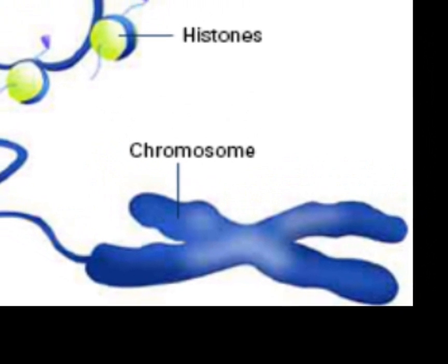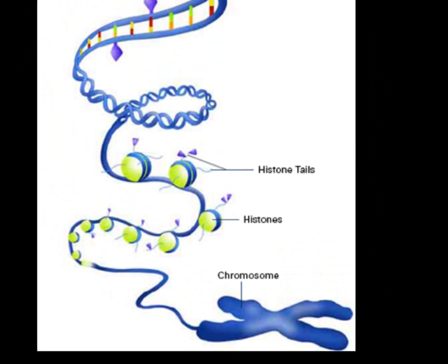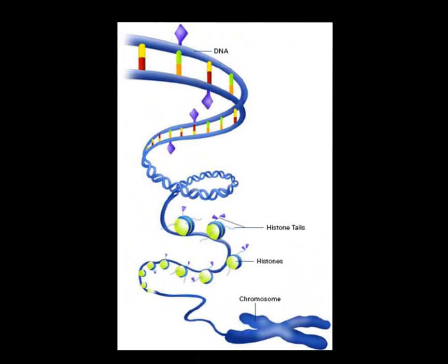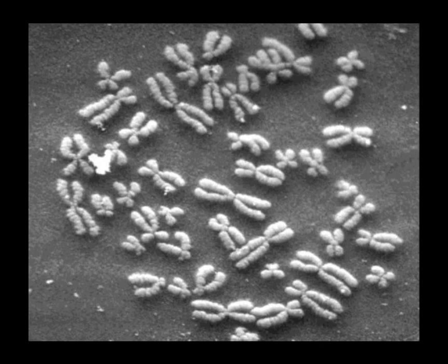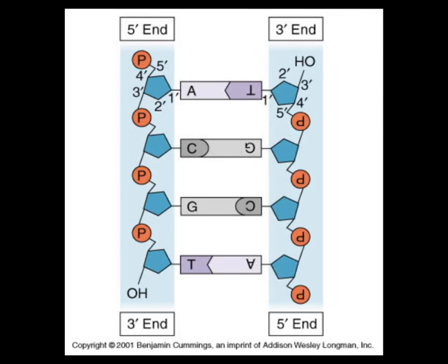DNA wraps around itself and wraps around things called histones and solenoids, and just gets balled up and tangled. When you tangle up enough of a mass of it, you can actually see it — and that's what chromosomes are. The information in DNA can be read in the order of the nitrogenous bases, going from a 5' end to a 3' end. Simply know that there is directionality to it, and you can start reading the genetic code by the order of the nitrogenous bases — A, T, G, and C.